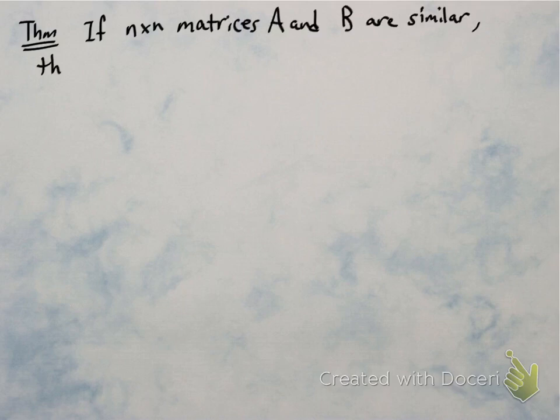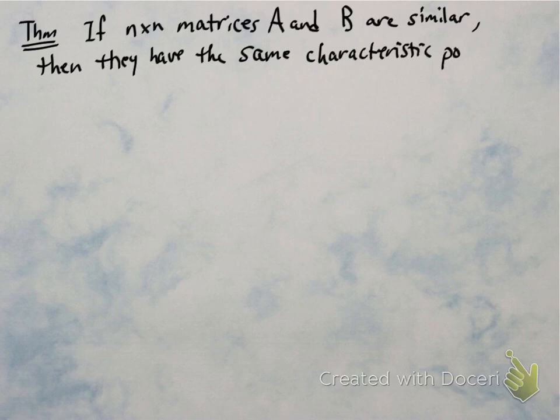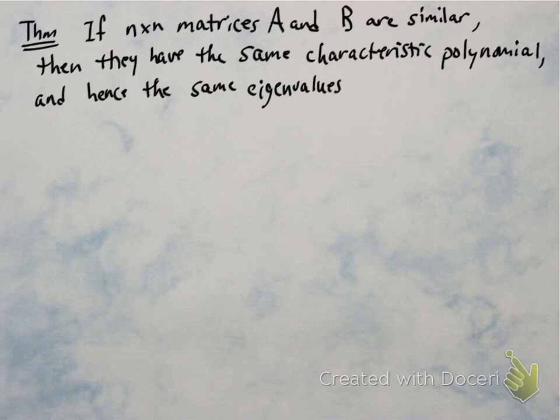So next is a theorem that talks about similar matrices and its relationship to eigenvalues. So two n by n matrices, A and B, if they're similar, then they have the same characteristic polynomial. And that tells us that they're going to both have the same eigenvalues with the same multiplicities.